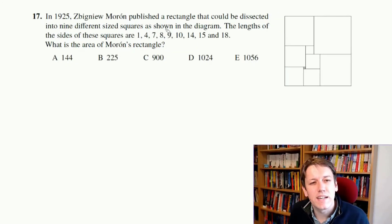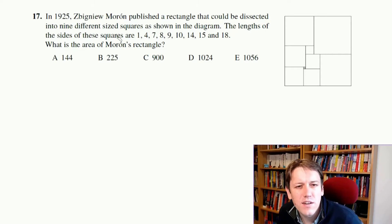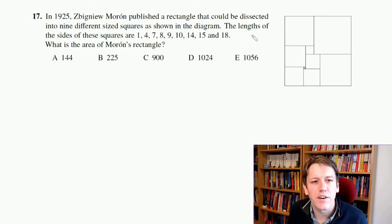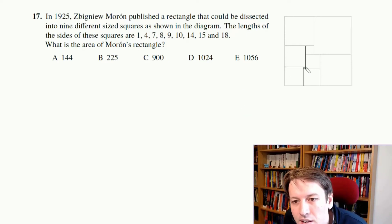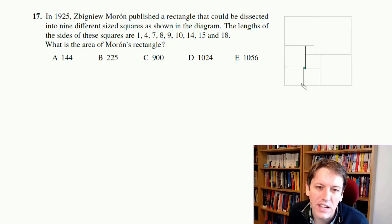The next question, we've got this rectangle that's dissected into nine different sized squares, as shown in the diagram, and so really what we've got to do here is work out which length is which, and it's not too bad here, right? So clearly the smallest one here is the one, the shaded one in the middle, right?